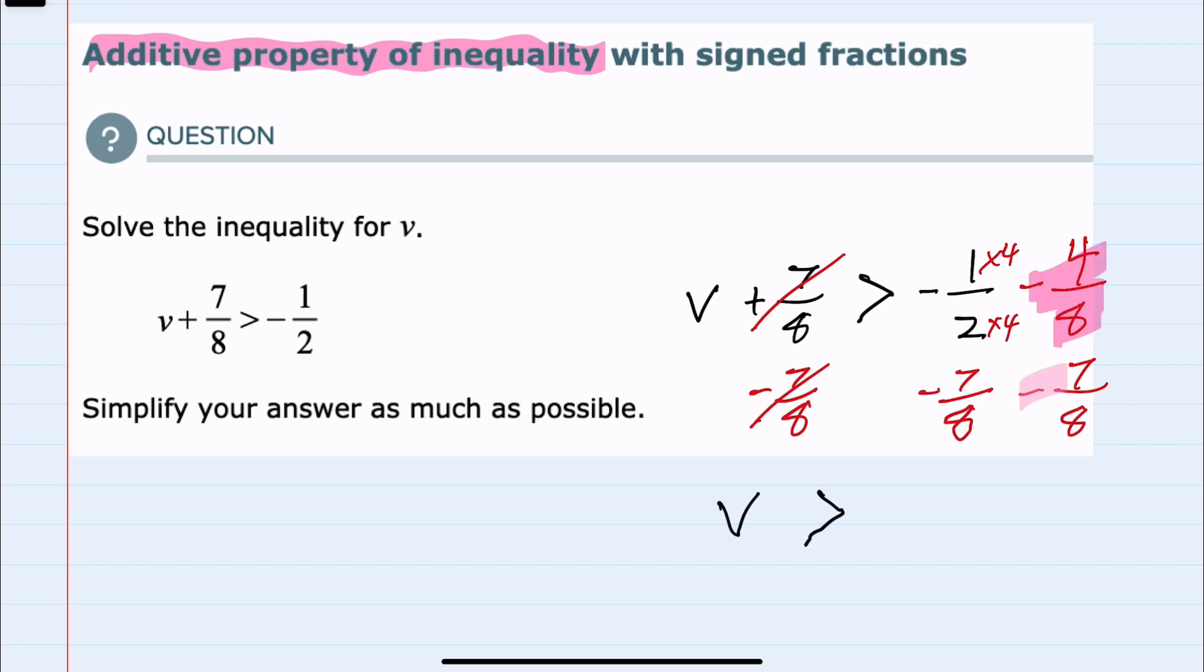Now that I have a common denominator, I can combine negative 4 and negative 7 would give me a negative 11 eighths. We have simplified our new inequality.